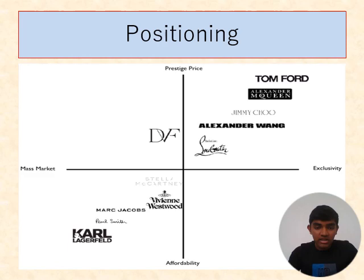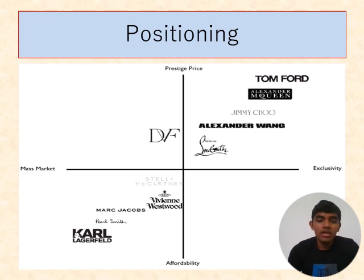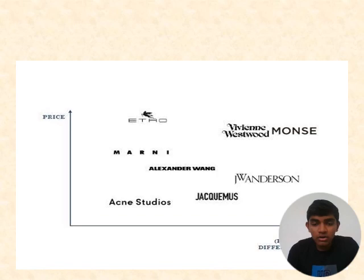For positioning, you can see the bar chart. Marc Jacobs has low affordability and is positioned in the high mass market. For Jacquemus, the price is very low and the style is higher — that is why people prefer Jacquemus more.